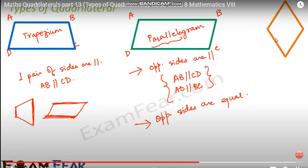Next we come to the parallelogram. In geometry we frequently use the word parallelogram. A parallelogram is a simple quadrilateral with two pairs of parallel sides. The opposite or facing sides of a parallelogram are of equal length, and the opposite angles are of equal measure. This is a direct consequence of the parallel postulate.